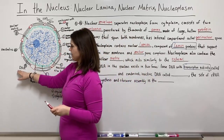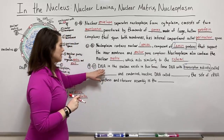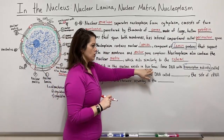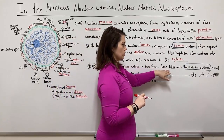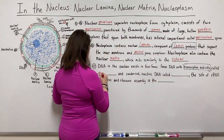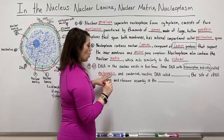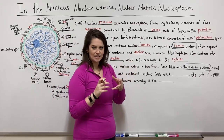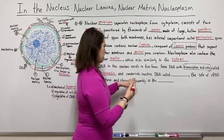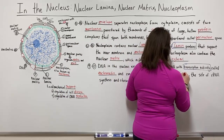Moving on to items nine and ten, this brings us near the end of our discussion on nuclear structure. We're talking about DNA and the nucleolus. The DNA in the nucleus exists in two different forms: it can be loose with transcription activity — this is called euchromatin — or it can be condensed and inactive, not currently supporting transcription, and that is called heterochromatin.